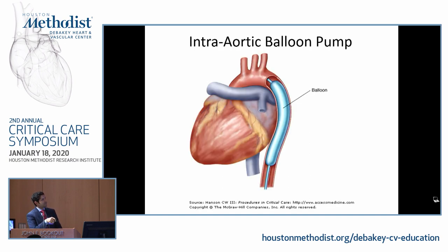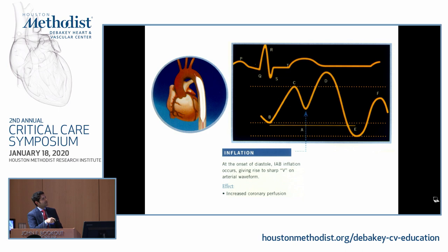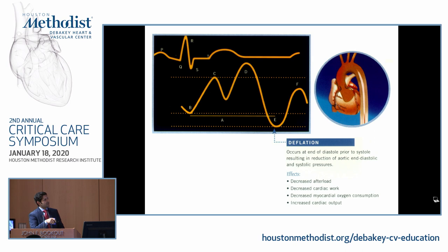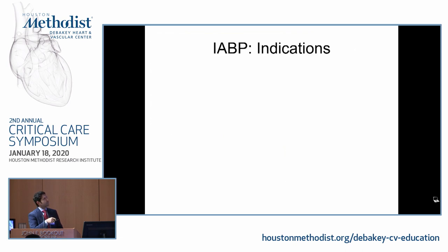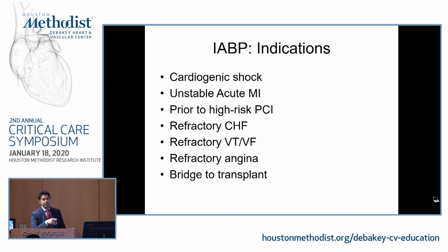The first device is the intra-aortic balloon pump, which has been around for a long time. It is placed in the descending aorta, inflates at the onset of diastole to increase coronary perfusion, and deflates at the end of diastole to decrease afterload and cardiac workload. It provides some cardiac output and decreases myocardial oxygen consumption. Indications include cardiogenic shock, unstable acute myocardial infarction, high-risk PCI, refractory heart failure, refractory VT or VF, refractory angina, and as a bridge to transplant.